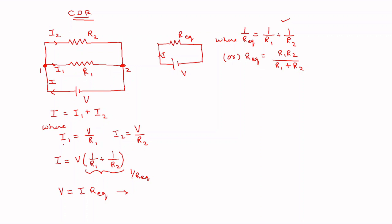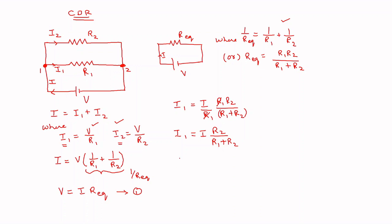Now let us find I1 and I2. I1 equals V divided by R1. Substituting V as I·R_equivalent, and writing R equivalent as R1·R2 divided by R1 plus R2, divided by R1 — the R1 terms cancel — so I1 equals I·R2 divided by R1 plus R2. Likewise, using this expression, you can find that I2 equals the total current I into R1 divided by R1 plus R2.